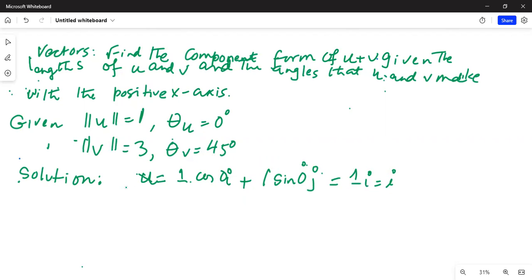Now similarly we can write vector v equals 3 cosine 45 degrees i plus 3 sine 45 degrees j, which equals 3 over square root of 2 i plus 3 over square root of 2 j, because cosine of 45 and sine of 45 are both 1 over square root of 2.